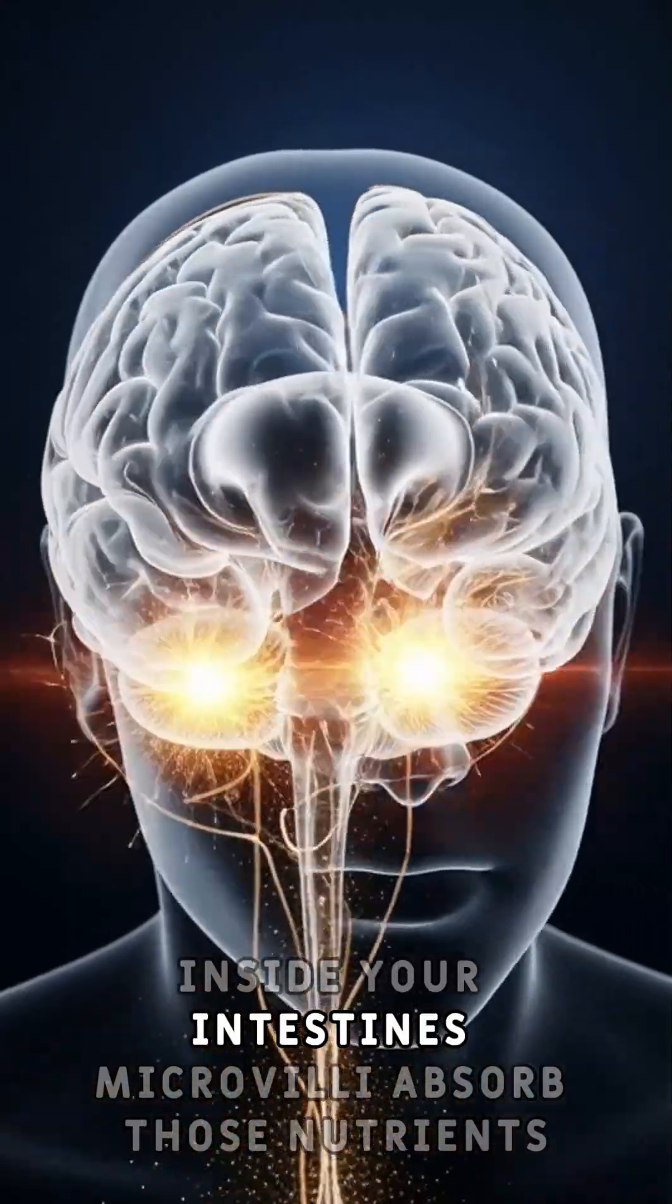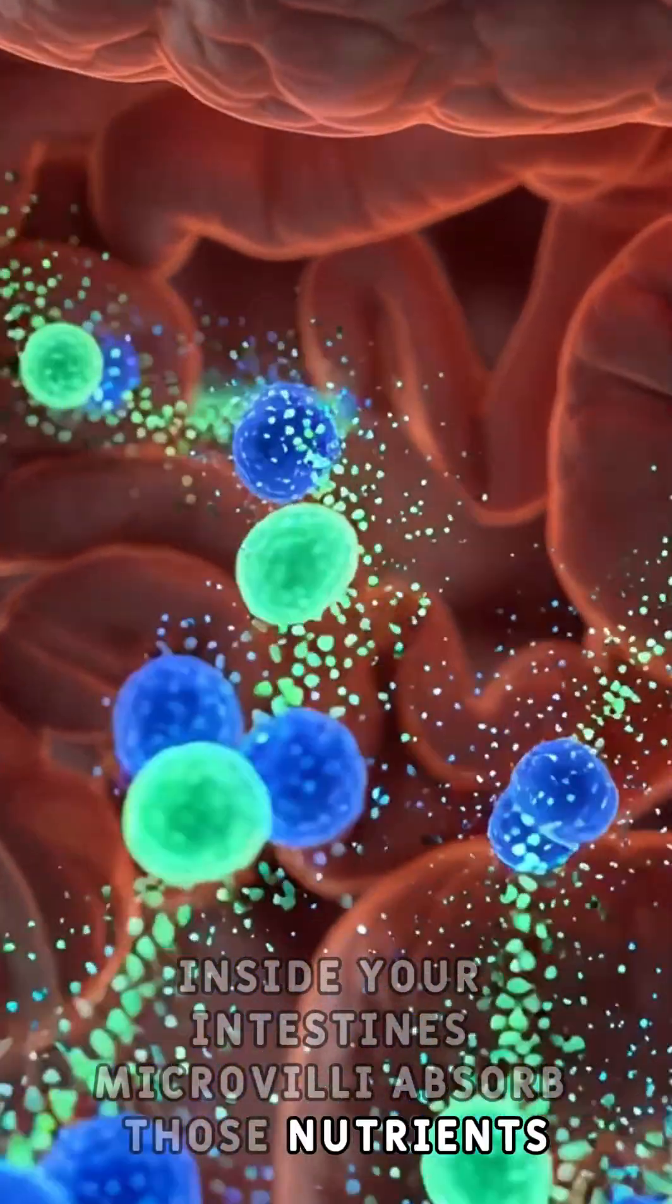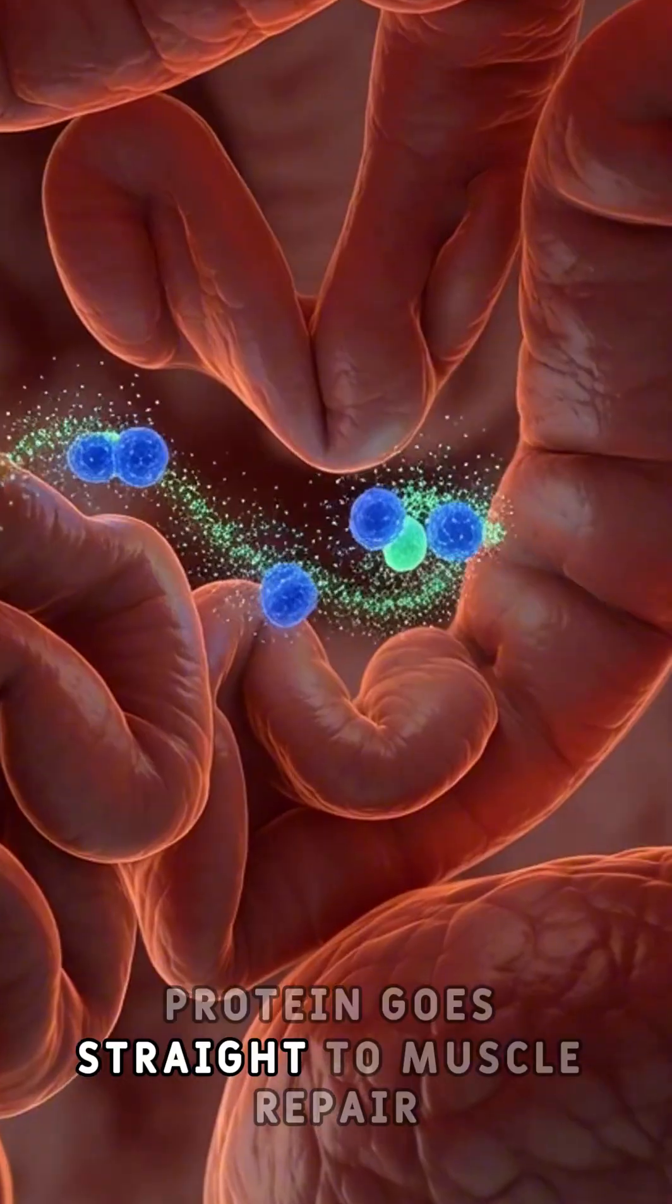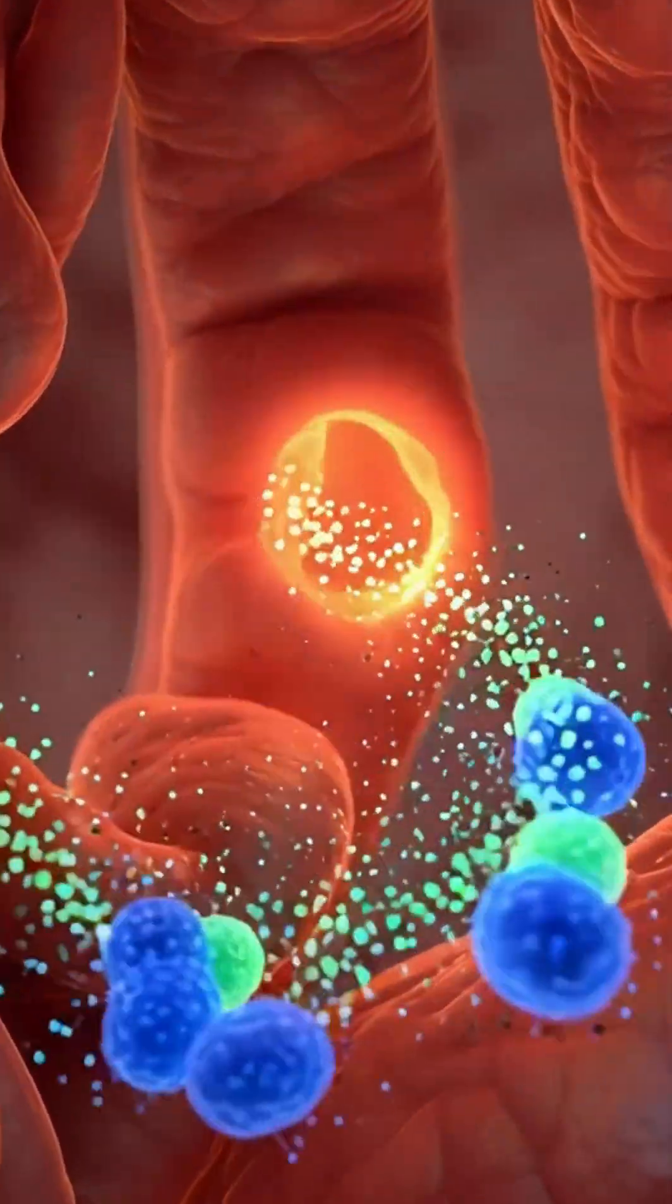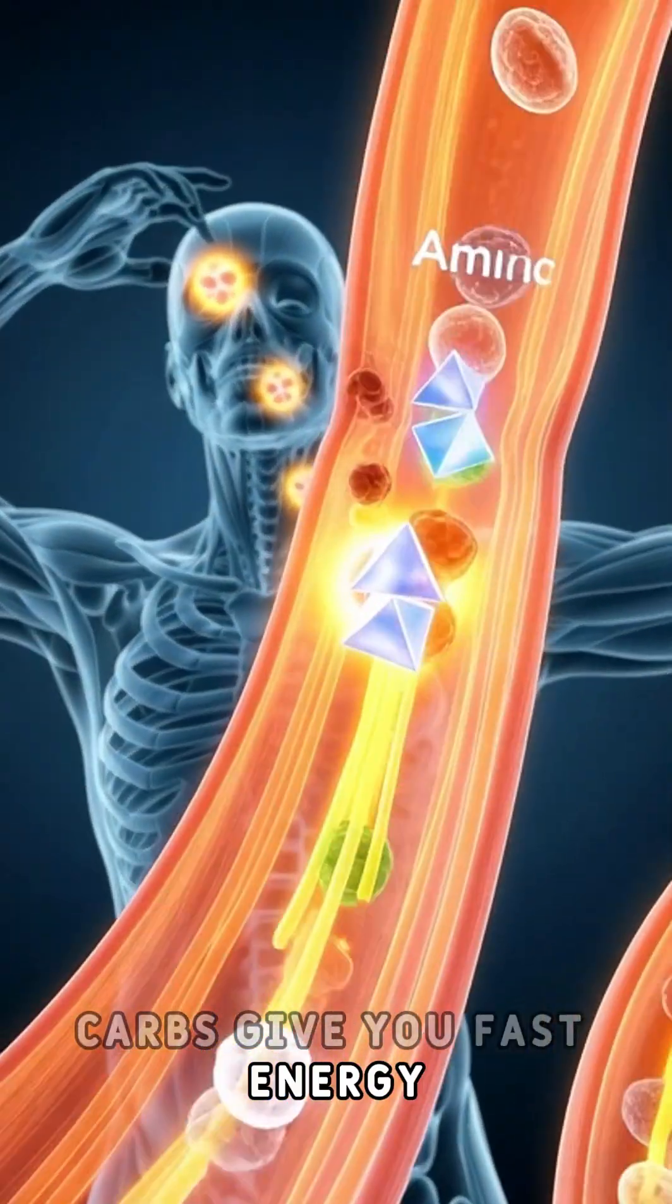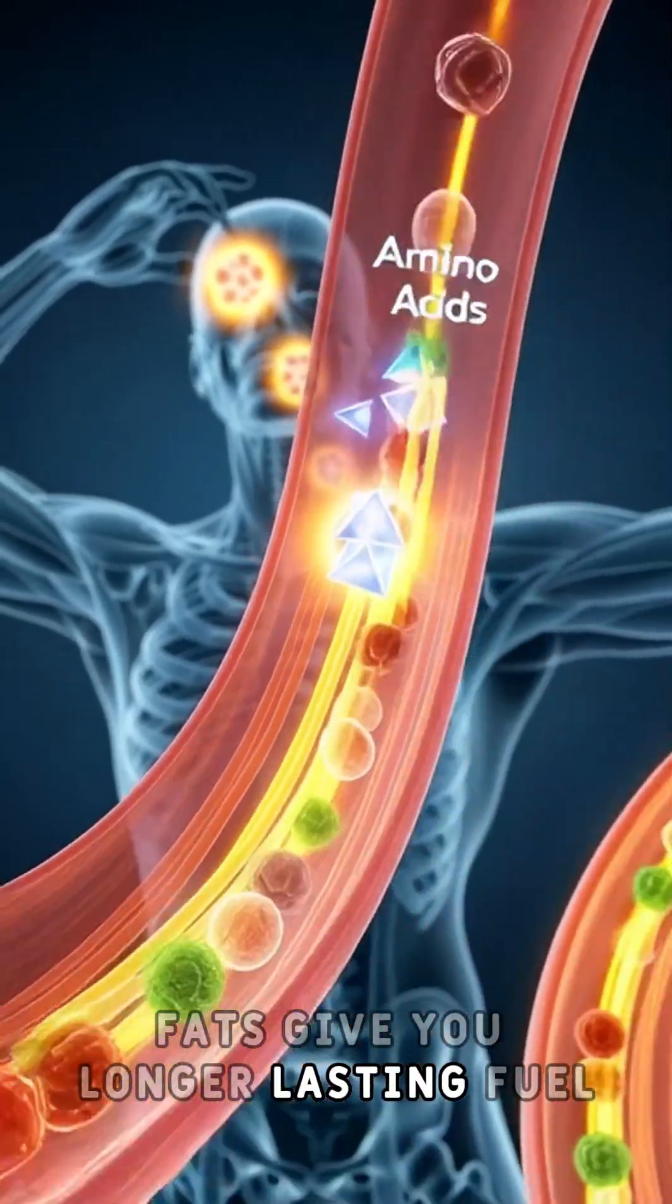Inside your intestines, microvilli absorb those nutrients. Protein goes straight to muscle repair. Carbs give you fast energy. Fats give you longer-lasting fuel.